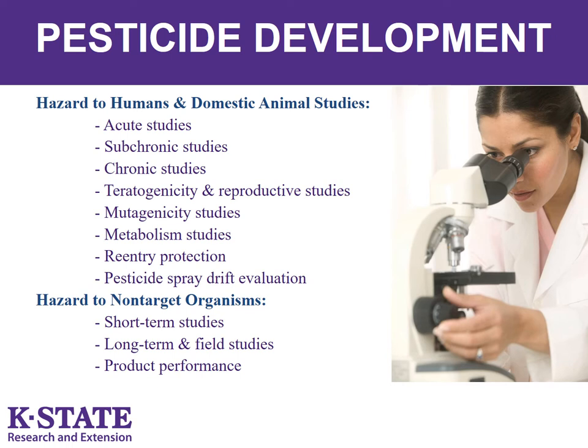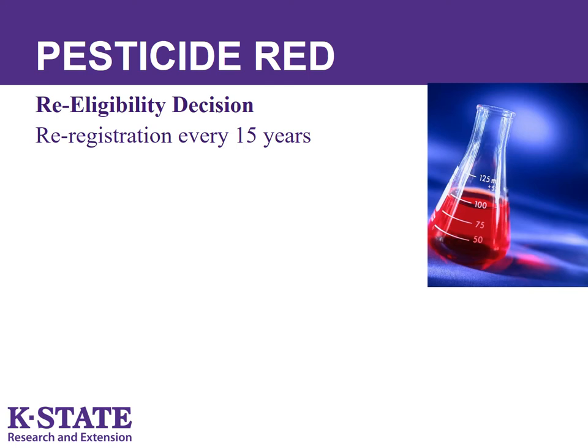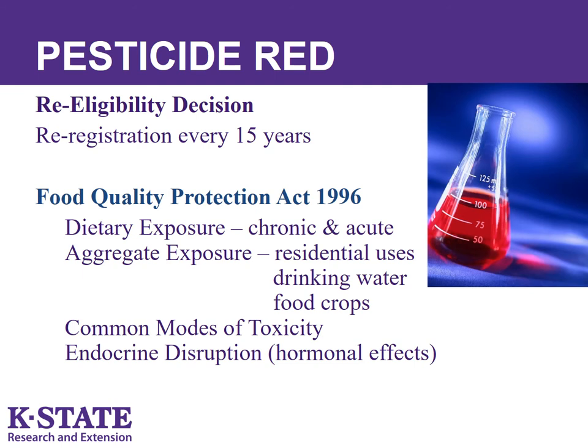Following label directions is required by law and is necessary to ensure safe use. Companies submit an application for a registration action such as to register a new pesticide active ingredient, new product for an existing pesticide, or adding a new use to an existing product. The EPA must review each pesticide registration at least once every 15 years. The Food Quality Protection Act of 1996 established additional requirements, including dietary exposure, aggregate exposure, common modes of toxicity, and endocrine disruption.